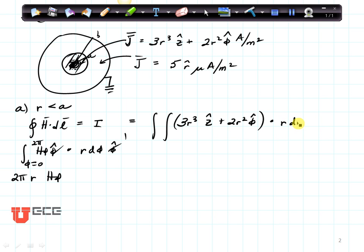When I do my dot products, this dot product goes to 1, but this dot product goes to 0, so this part of the current goes away.